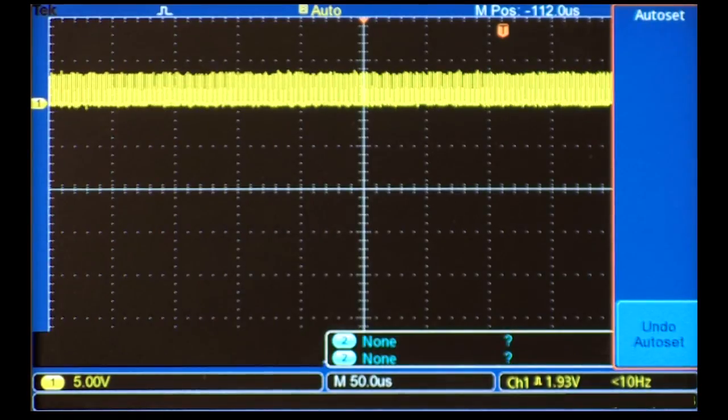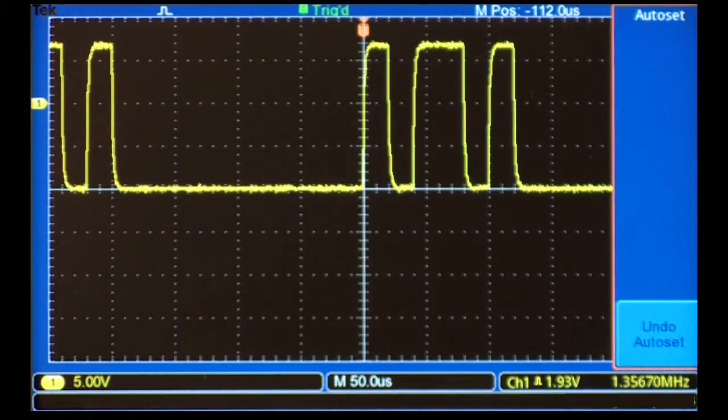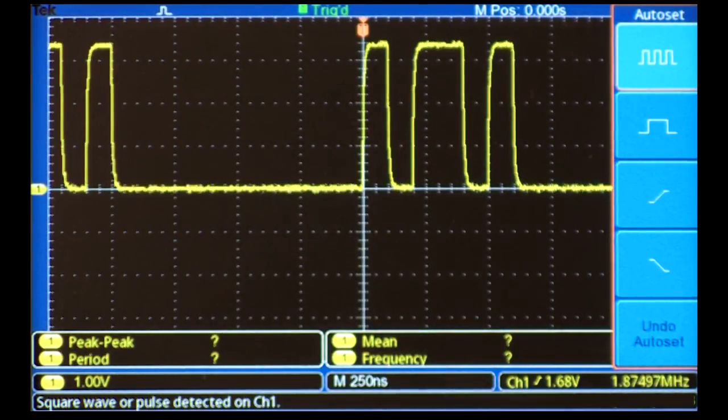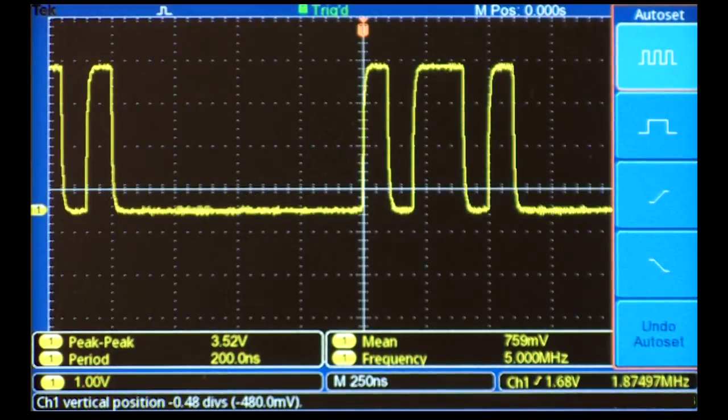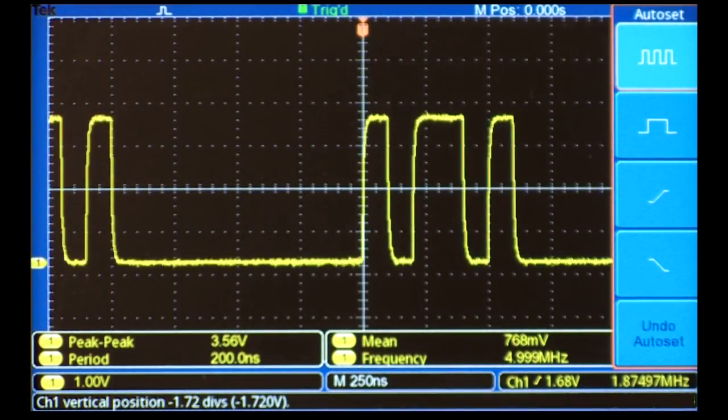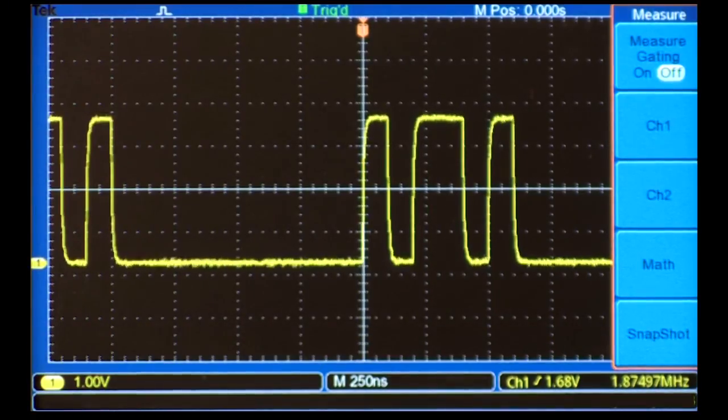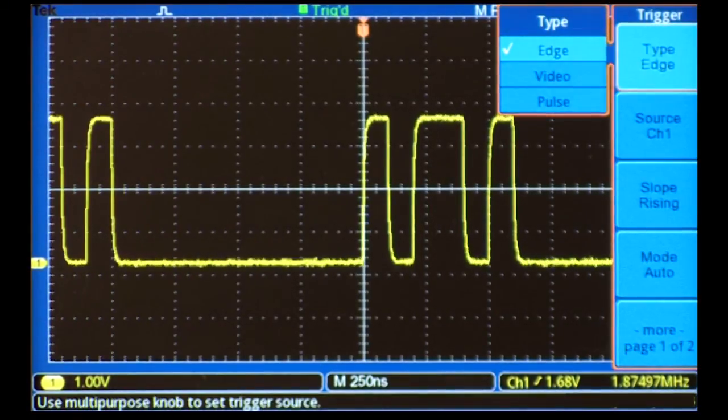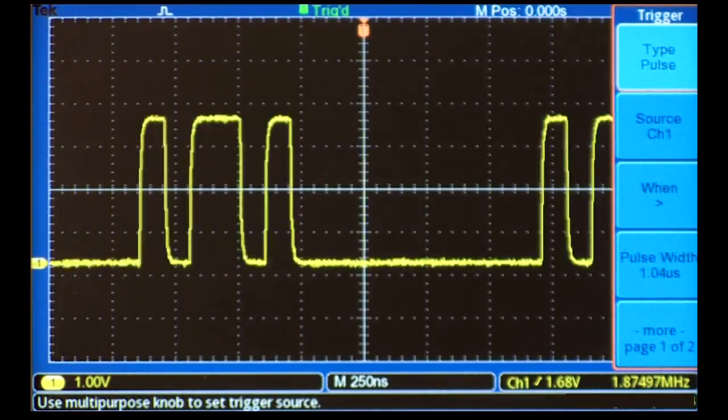Pulse width triggering can also be useful for triggering narrow pulses, like glitches. After an Auto Set, these pulses look just fine. The narrow pulses look to be around 100 nanoseconds in duration. But there's something lurking below the surface. It doesn't show up because it occurs so infrequently.